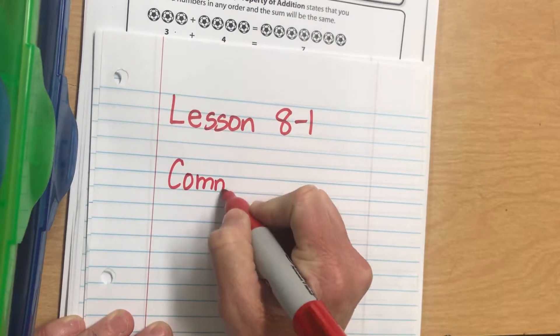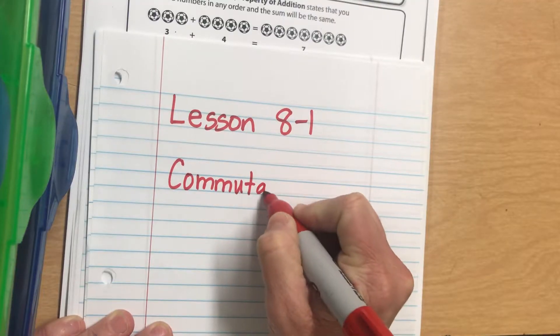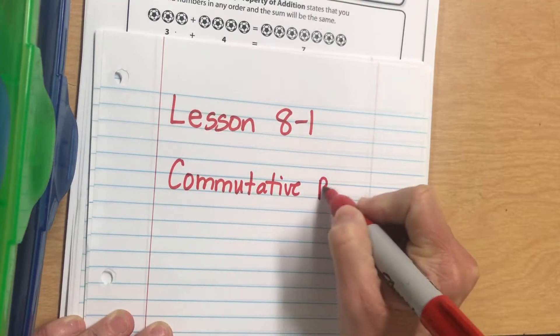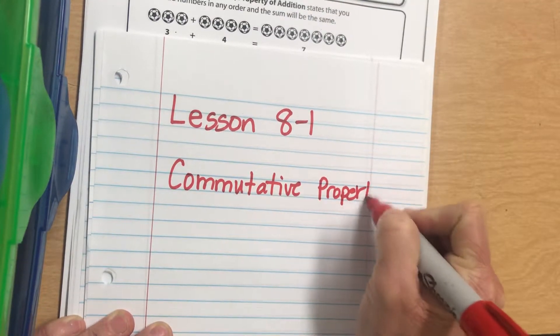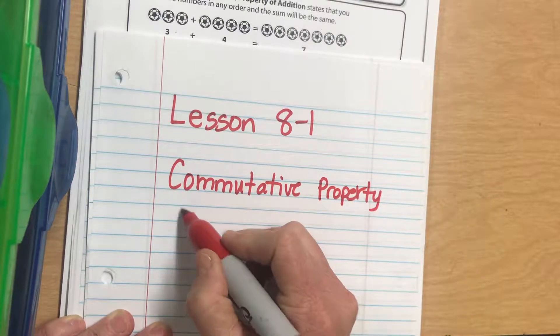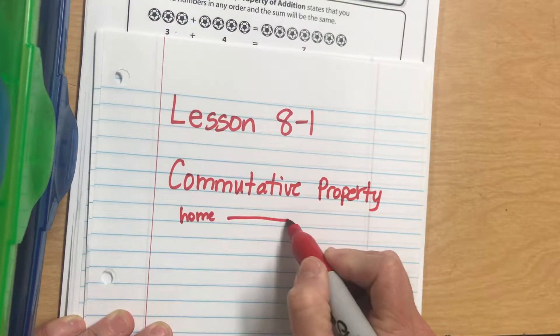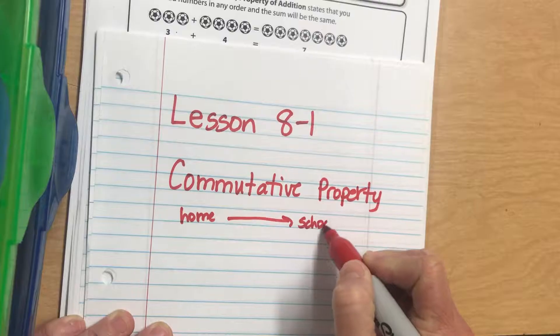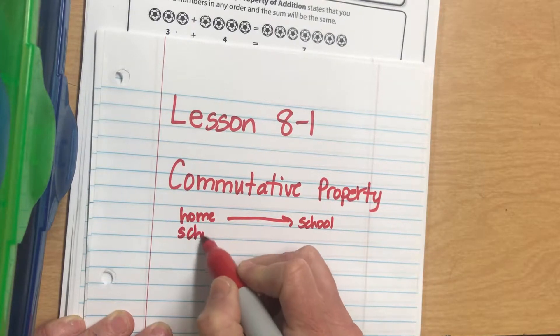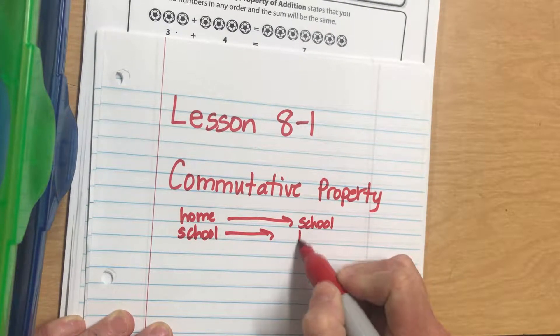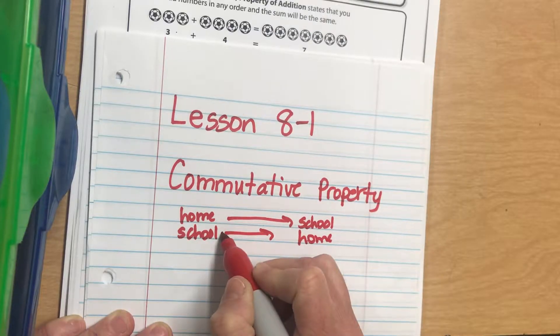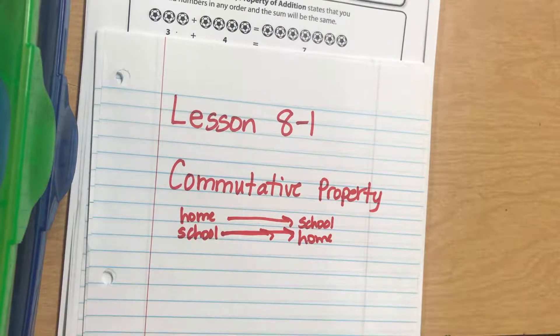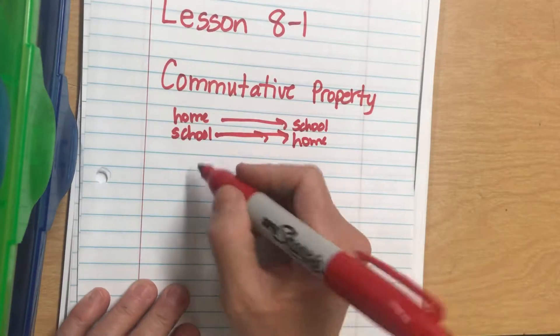The commutative property means it doesn't matter if I'm going from home to school or from school to home; it's the same distance from point A to point B. In multiplication, that meant 3 times 4 equals 12 is the same as 4 times 3 equals 12.